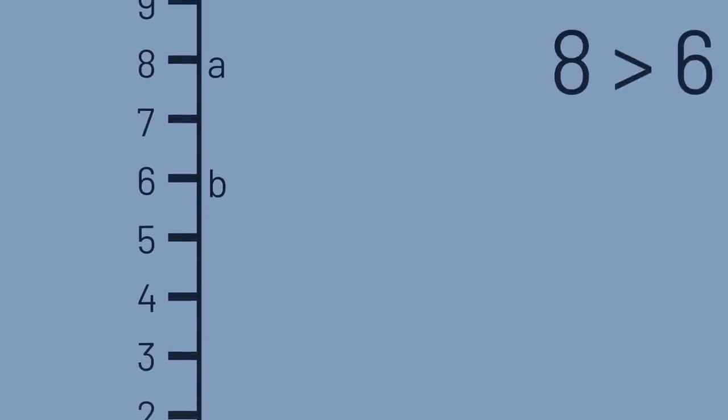Numbers on the number line obey the principle of transitivity. If A is greater than B, and B is greater than C, then we know A is also greater than C.